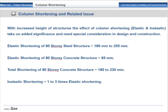We hence need special consideration in design and construction. As an example, column shortening analysis of an 80-storey steel building and concrete building was done. The steel structure had elastic shortening of 180–255 mm, whereas concrete elastic shortening was 65 mm. Even though elastic shortening was only 65 mm, the total shortening of the concrete structure was 180–230 mm, meaning inelastic shortening was almost one to three times the elastic shortening. Hence the inelastic properties varying with time shall be considered for high-rise structures.